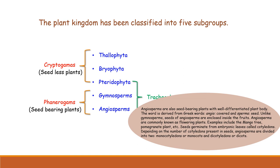Because angiosperms bear flowers, their seeds are protected inside fruits — the seeds are enclosed within the fruit. Examples of angiosperms include mango tree, pomegranate plant, walnut tree, and apple tree. Most of the plants you see around you are angiosperms.